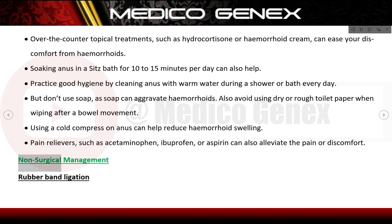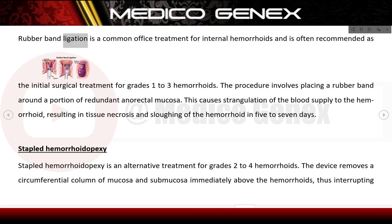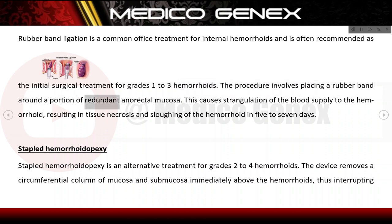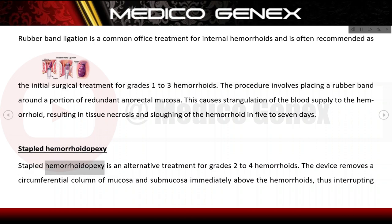Rubber band ligation is a common office treatment for internal haemorrhoids and is often recommended as the initial surgical treatment for grades 1 to 3 haemorrhoids. The procedure involves placing a rubber band around a portion of redundant anorectal mucosa, causing strangulation of the blood supply to the haemorrhoid, resulting in tissue necrosis and sloughing of the haemorrhoid in 5 to 7 days.